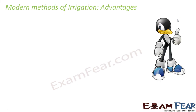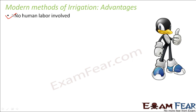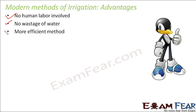Now let us see how modern methods overcome the disadvantages of traditional methods. Modern methods involve no human labor, whereas traditional methods required human beings or cattle. Even though human labor or cattle is cheaper in India, it is less efficient. In the drip or sprinkler system there is no wastage of water, but in traditional methods a lot of water is wasted. Modern methods are more efficient — water is supplied evenly and only when required, ensuring proper utilization.